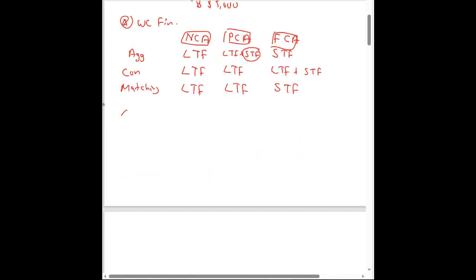The next part covers how to manage and control your inventory. For inventory control, you should know the EOQ model, the just-in-time system, the bin system, the periodic review system, and the reorder level.